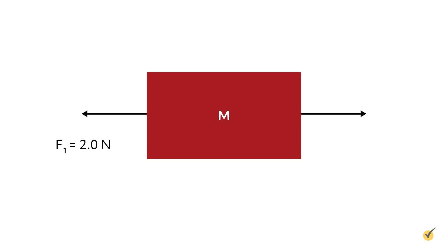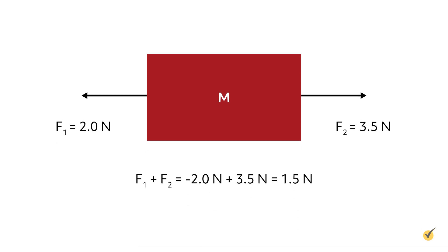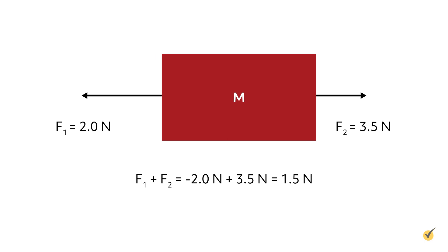We will denote F1 as the negative direction and F2 as the positive direction. F1 plus F2 equals negative 2.0 newtons plus 3.5 newtons, which equals 1.5 newtons. The net, or total force, is 1.5 newtons in the positive direction, to the right. So the box will accelerate in that direction, as if only a 1.5 newton force in the positive direction were acting on it.